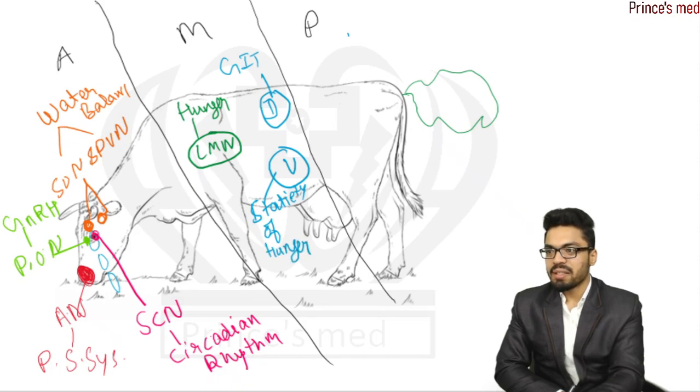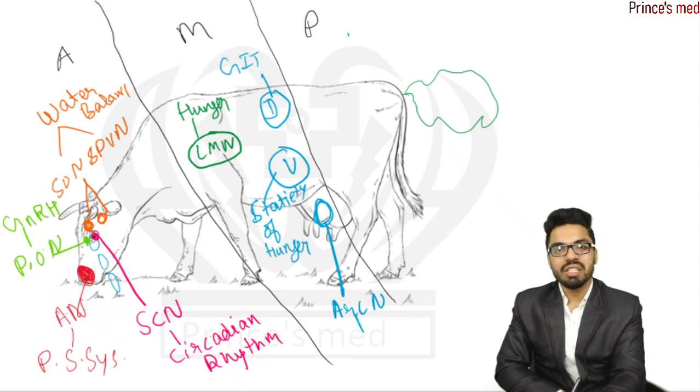And here we have arcuate nucleus, and function is, as it is in the mammary gland, so function is milk production.